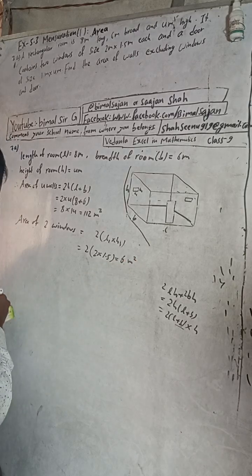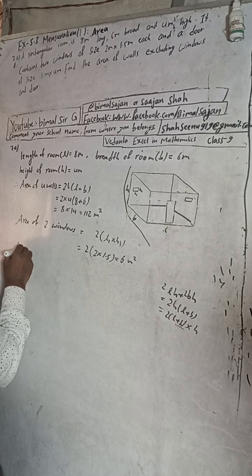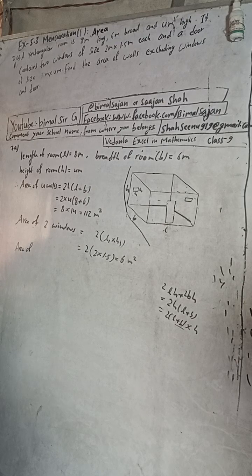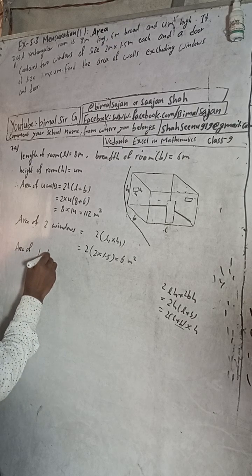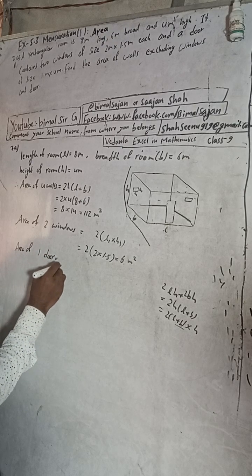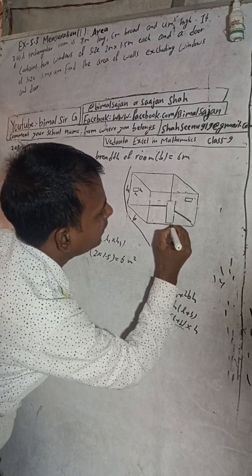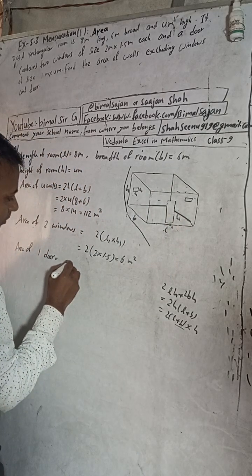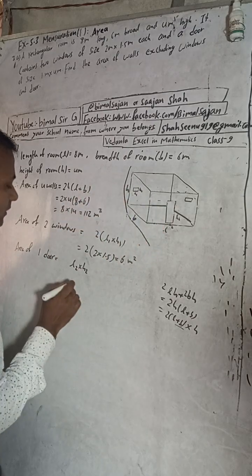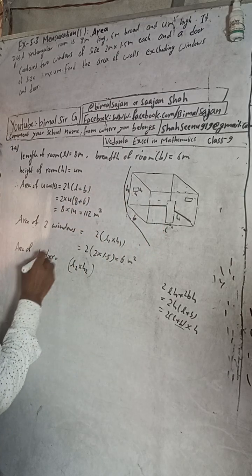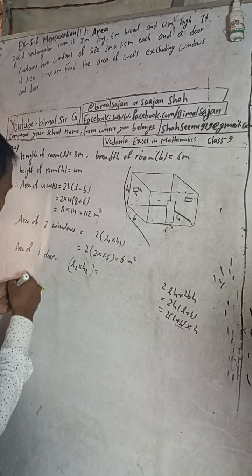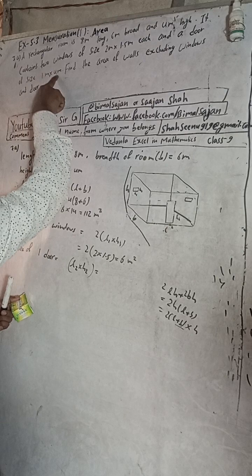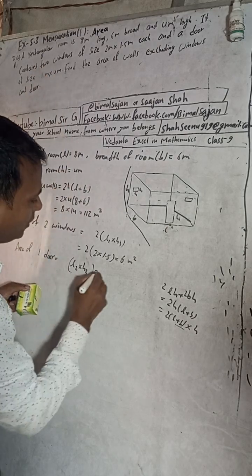Area of one door. Suppose this is our door, length L2 and H2. Then area of the door will be L2 into H2, or L into B. There is only one door, so no need to multiply. What is the size of the door? 1 into 4, that means this is 4 square meters.